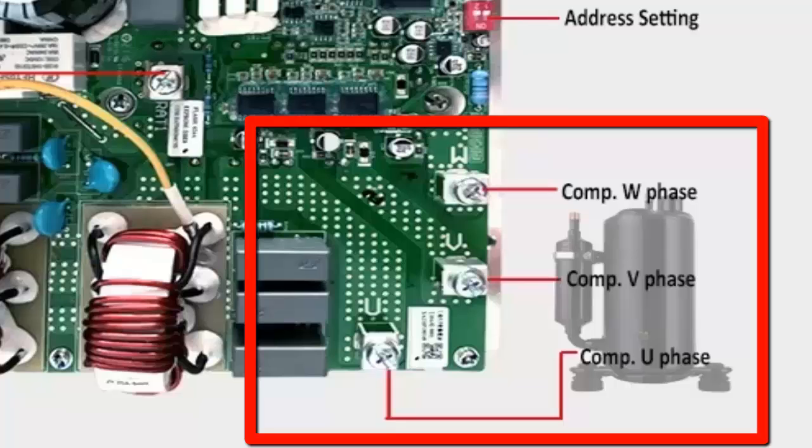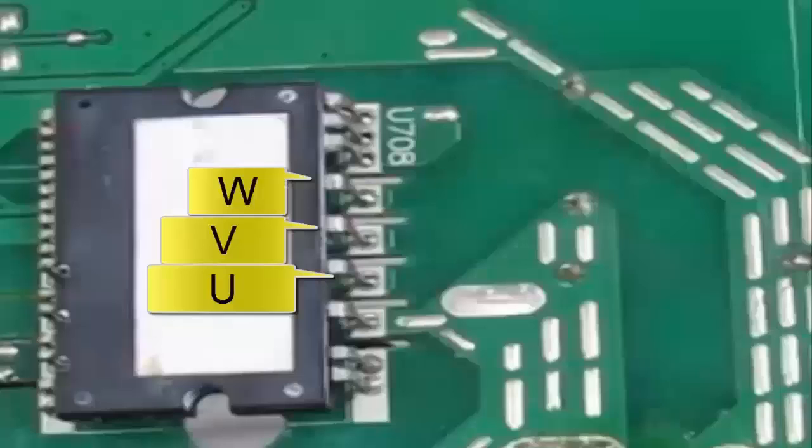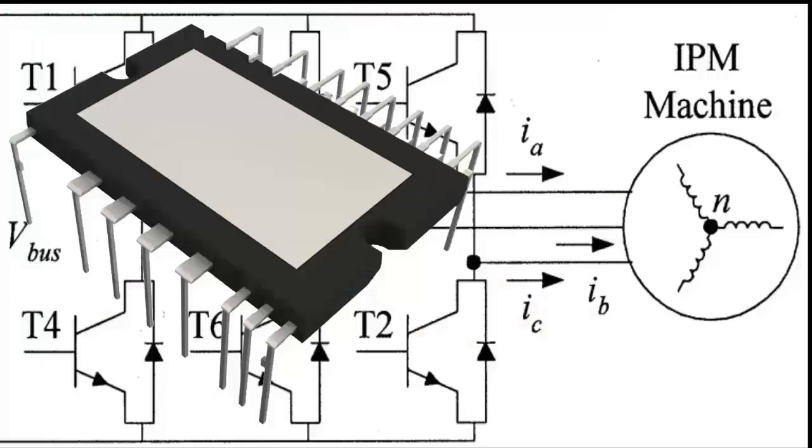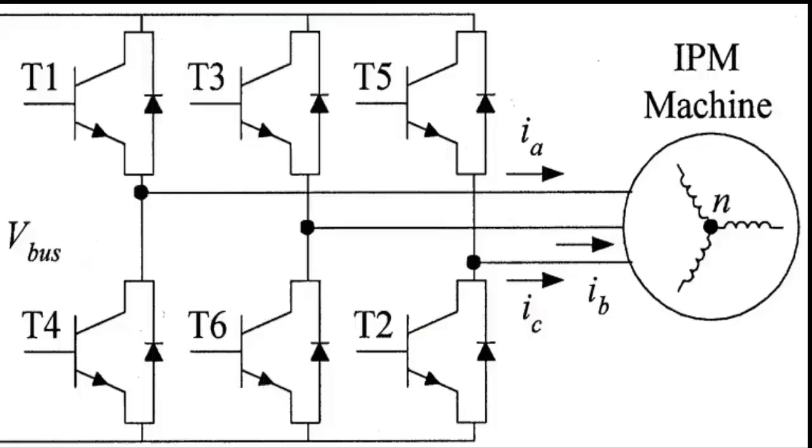6. Set the multimeter to the diode scale. 7. The IPM Electronic Circuit is internally composed of six IGBT transistors, each containing a diode, that we will test.